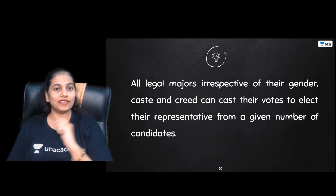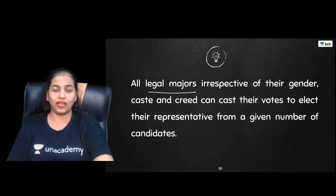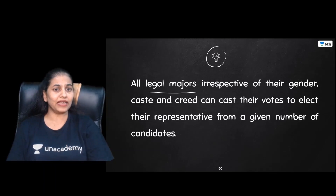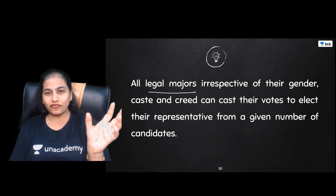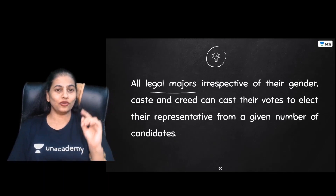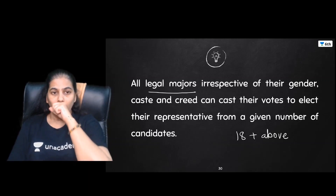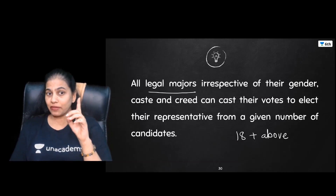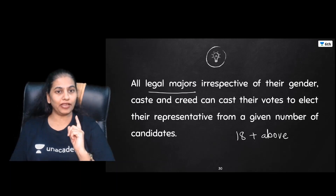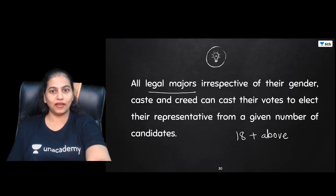You have the right to vote — this is a legal right. However, if you have previously been banned from voting due to a crime, you are not supposed to vote. Other than that, every citizen — male or female — who is 18 years and above is allowed to vote. This is what we call the one person, one vote system — a single vote system.